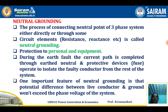The process of connecting the neutral point of a three phase system either directly or through some circuit elements such as resistance or reactance is called neutral grounding. This grounding gives protection to personnel and equipment. During the earth fault, the current path is completed through earth, neutral, and protective devices, which operate to isolate the faulty conductor from the rest of the system.